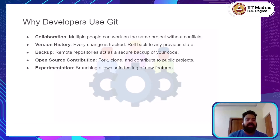Additionally, Git and platforms like GitHub are the backbone of open source contribution — developers across the globe can fork projects, clone repositories, and contribute improvements. Finally, Git makes experimentation safe and easy. You can create new branches to try out new ideas without risking the stability of your main codebase.